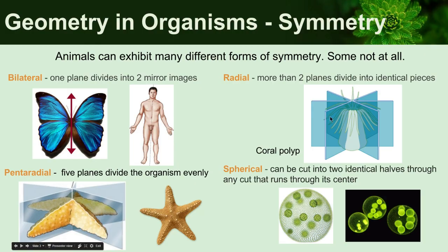You also have radial symmetry, which is when more than two planes divide the organism into equal parts. So three planes here divide this coral polyp into equal parts. And we have pentoradial symmetry here — the sea star is notorious for that. Pentoradial symmetry is when five planes divide the organism evenly.